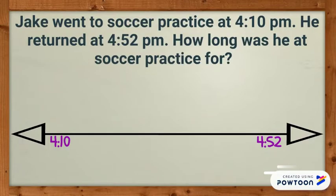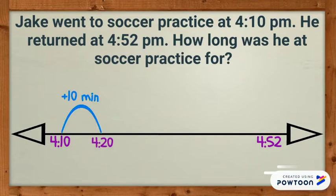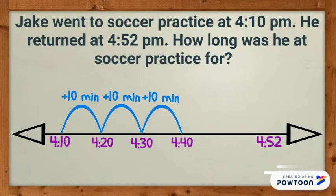Now I can start figuring out how much time passed in between the start and end. I can tell that the hour did not change, so I will start by adding groups of 10 minutes until I get close to my ending time. 4:10 plus 10 minutes equals 4:20. 4:20 plus 10 minutes equals 4:30. 4:30 plus 10 minutes equals 4:40. 4:40 plus 10 minutes equals 4:50. I cannot add any more tens or else I will go over my end time.